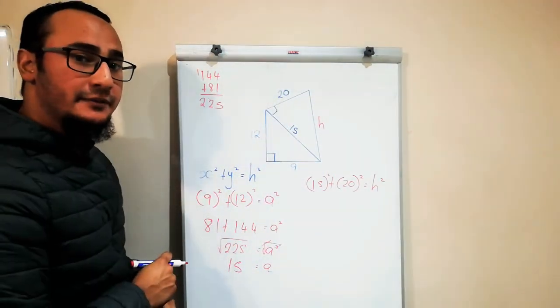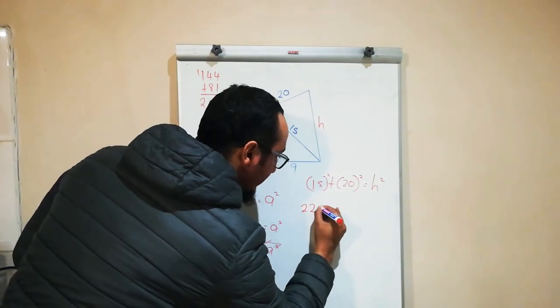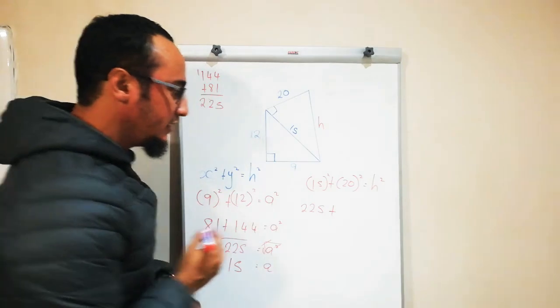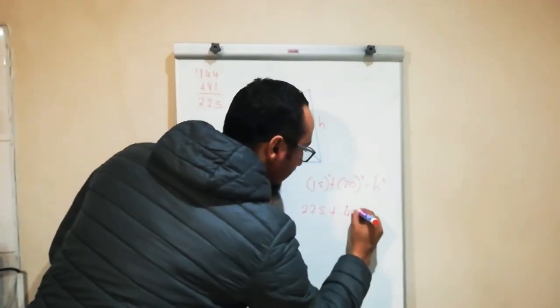15 squared—15 multiplied by 15—equals 225, plus 20 multiplied by 20 equals 400, and that equals 225 plus 400, which would equal 625.